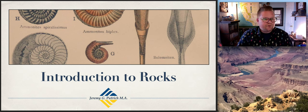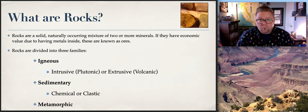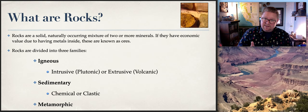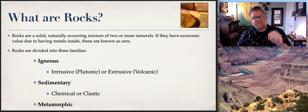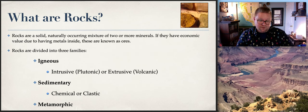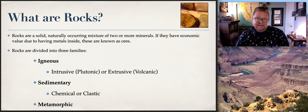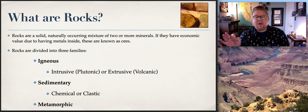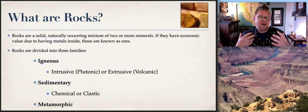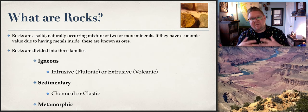The first thing I want to talk about is: what are rocks? Rocks are solid, naturally occurring mixtures of two or more minerals. Unlike minerals, rocks can also include organic material — that's the big difference. If a rock happens to have economic value, we can call it an ore. For example, a piece of granite with a quartz intrusion that has gold in it would be an ore because it has economic value.